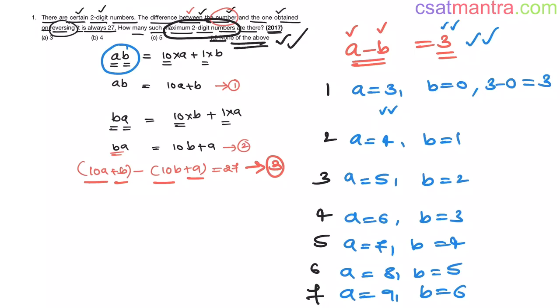Very easy my friends. Two-digit number is given. Write it in terms of decimal system the way we taught in the class, and then do the difference. Difference is 27. From there you will be getting one condition, that is A minus B equals 3. Thereafter just look for the possibilities.